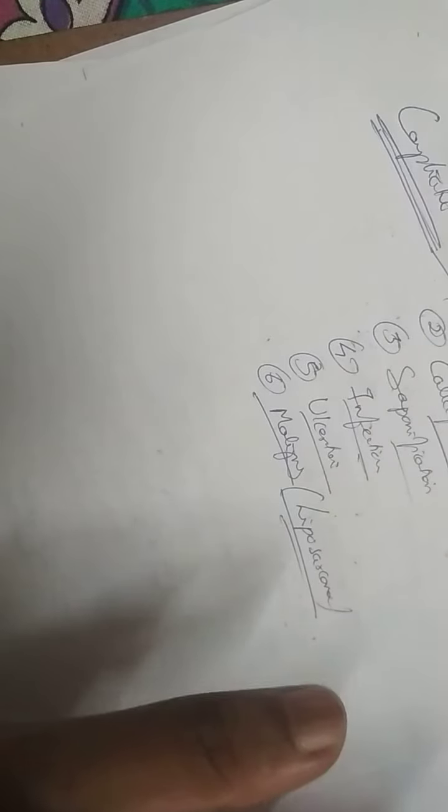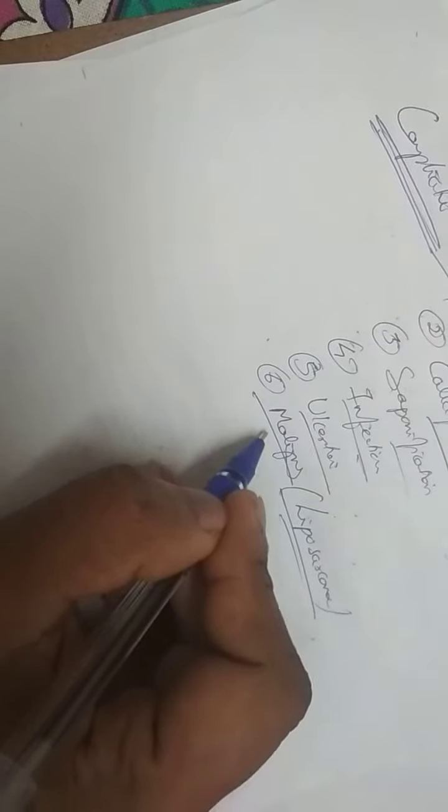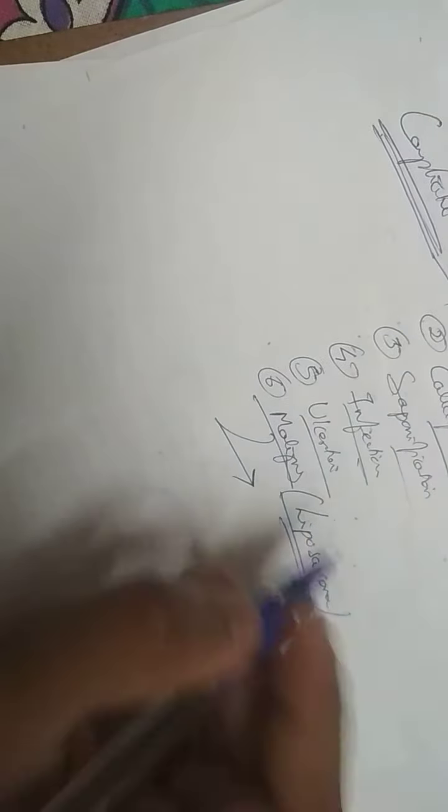Liposarcoma is common in retroperitoneum, thigh, and skin, where the benign lipoma, which is usually not changing in size, shows rapid growth. There is warmth and vascularity, skin becomes fixed, and there can be fungation. In such cases, there can be a risk of blood spread to the lungs. These are the complications of lipoma.